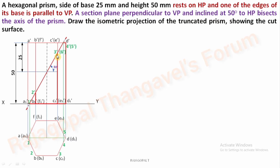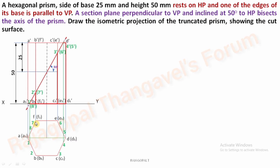After extending the vertical projector, the cutting point on DE side — mark it as 5. Next on E dash E1 dash, which is E E1 — mark it as 6. Then on F dash F1 dash — the next cutting point is 7 dash; the corresponding top view point is 7. Finally on F1 dash A1 dash — the last cutting point is 8 dash; extend the vertical projector on A1 F1 to find the meeting point and mark it as 8.